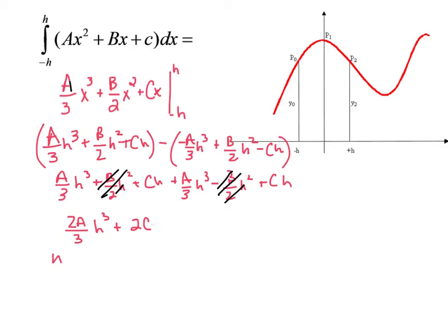Let me change this to a lower case h. I don't know why I suddenly switched. h over 3. When I do that, I'm left with 2ah squared plus 6c.